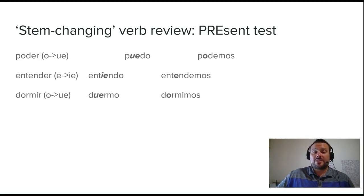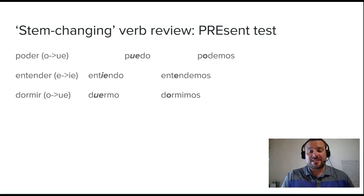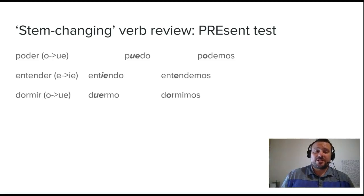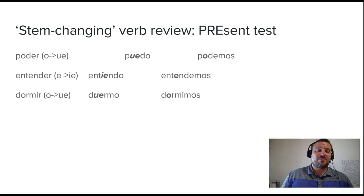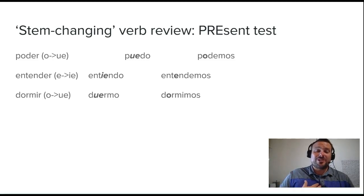Another really important thing from this week is the stem-changing verbs — it's a review. Last year you worked on this. It's called the present tense — you stress that second-to-last syllable in Spanish for the present tense. And this is a review of those verbs where the vowel doesn't have enough to hold it up, so it splits. So, poder — that O in the present tense, when it's stressed, becomes UE. So you get puedo. When you emphasize that syllable, it gets a UE instead of an O. But when you say podemos, in the nosotros form, it doesn't split because you're not emphasizing that second-to-last syllable on the O. So, you do not split it — it's podemos.